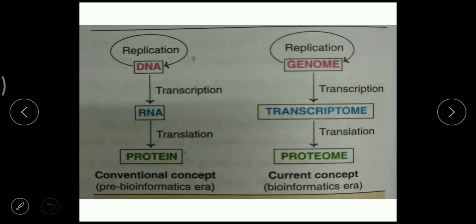Coming to the conventional concept, from the pre-bioinformatics era: DNA produces another copy of itself, which we call replication. After that, DNA is converted to RNA, which we call transcription, and that RNA is converted to protein, which is called translation. This is the conventional concept of the central dogma of molecular biology.